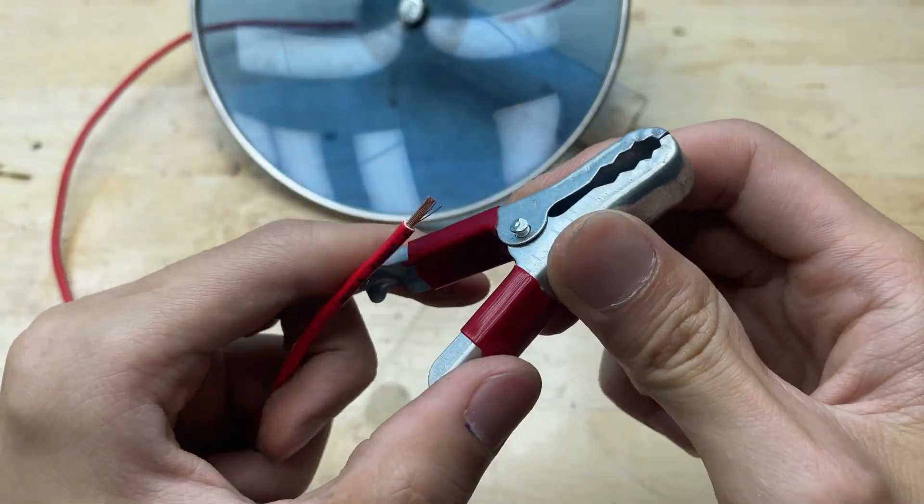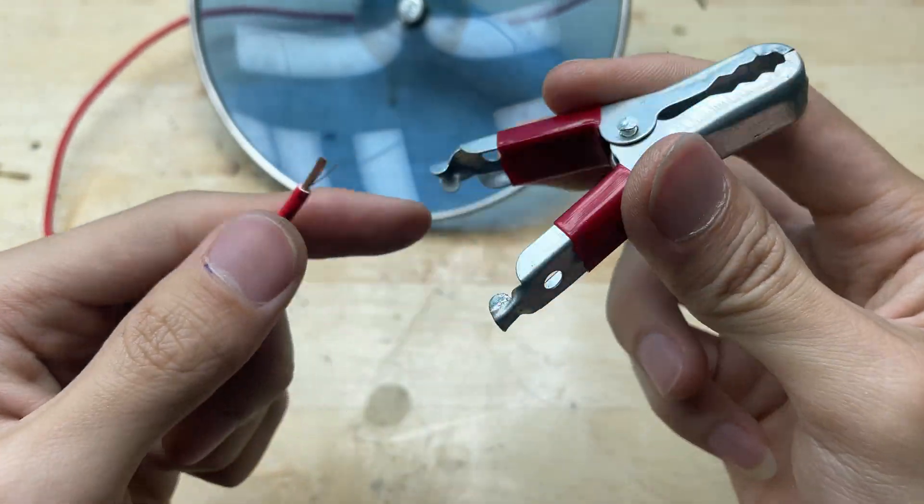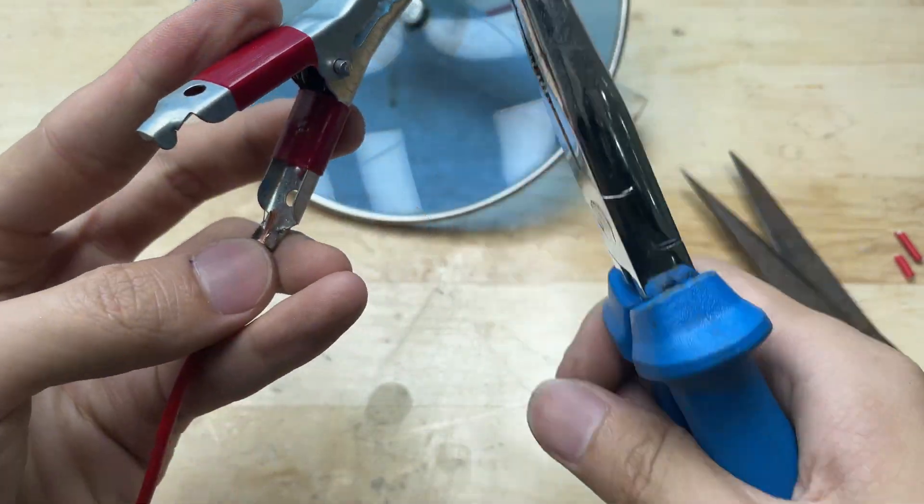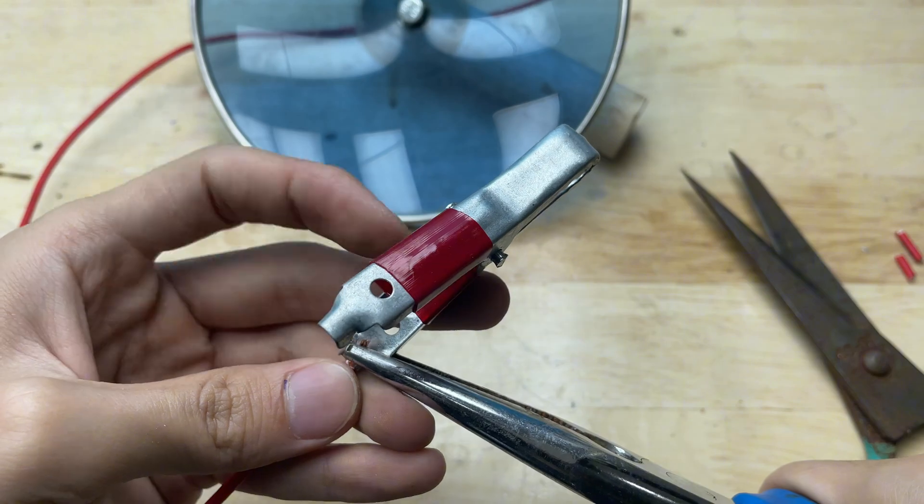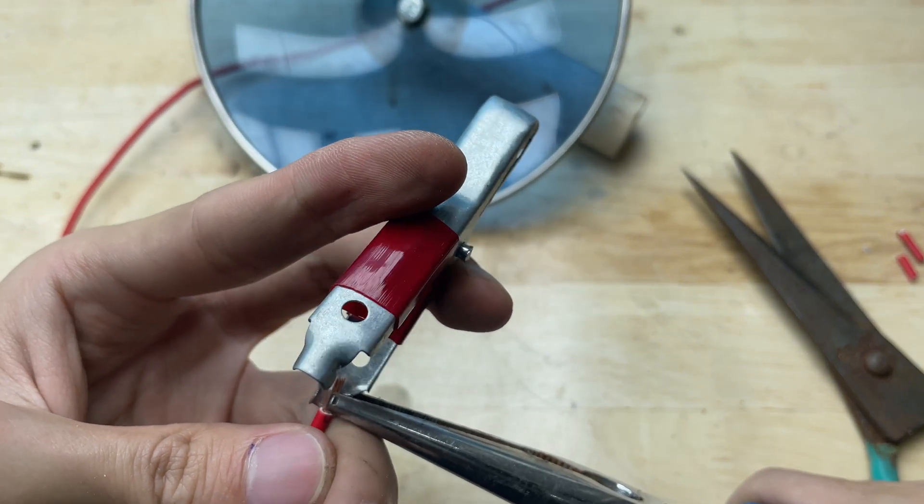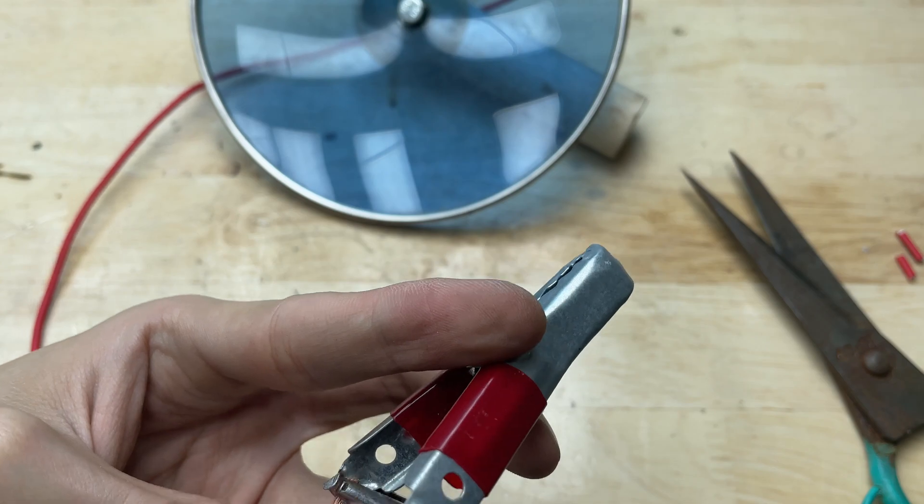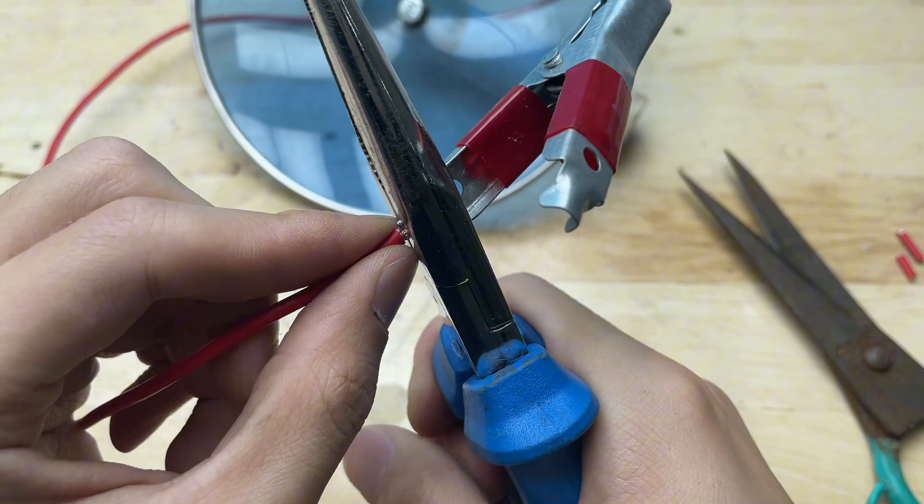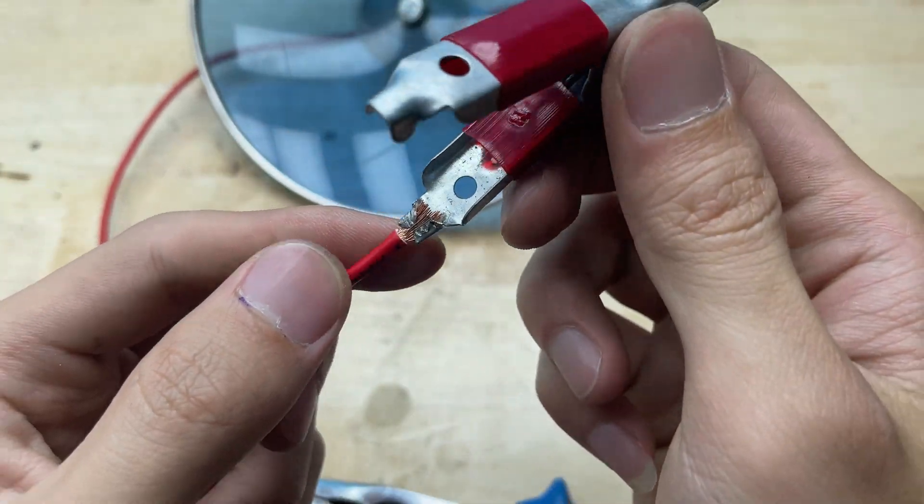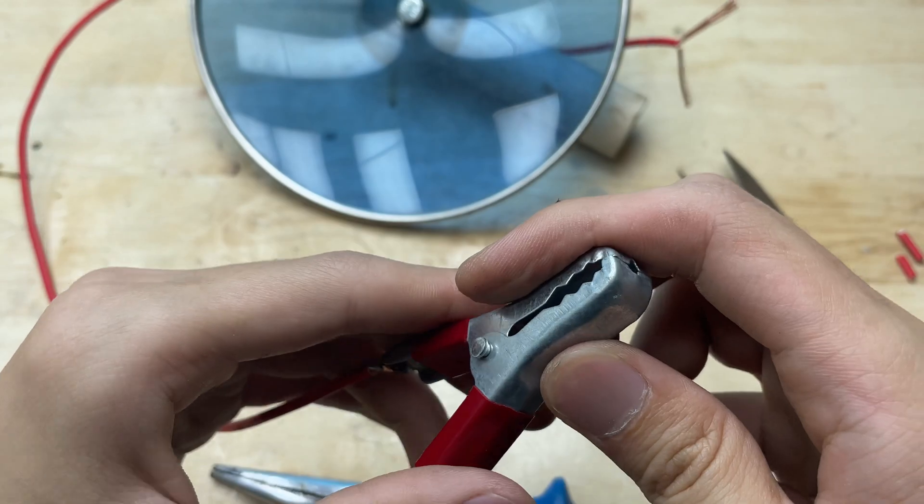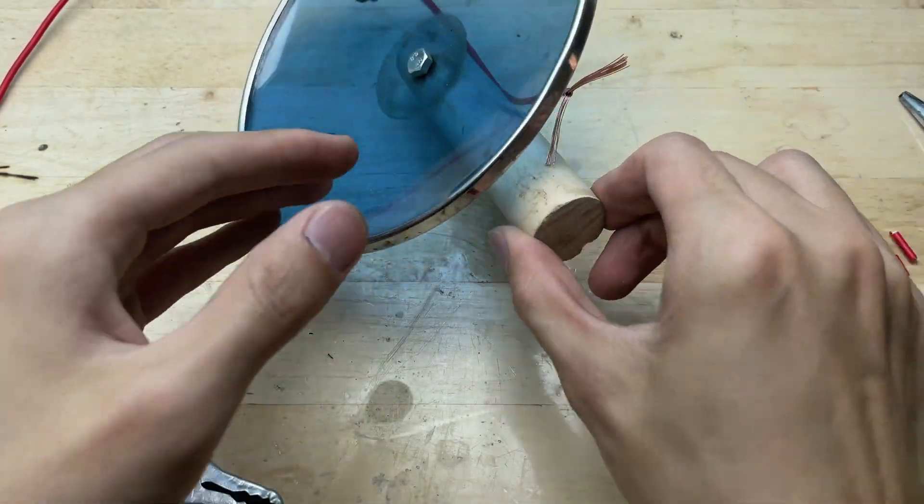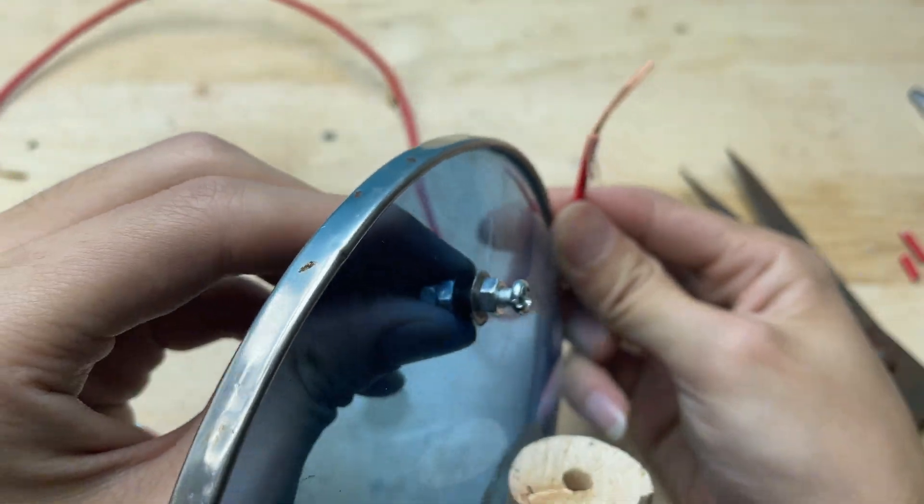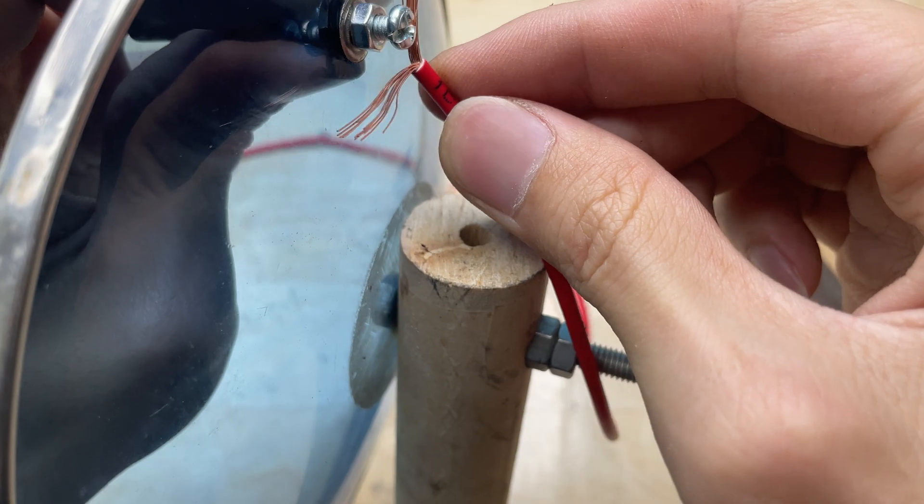Now, let's attach the wires to the battery clips. Double-check the polarity so everything works safely. The other end of the wire goes to the bolt by the steam vent hole.